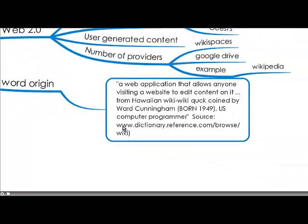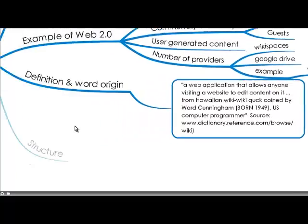So what is the word origin? Well, it's a web application that allows anyone visiting a website to edit content on it. It comes from the Hawaiian language — 'wiki wiki' — which means 'quick quick,' and it was coined by Ward Cunningham. I love that: wiki wiki, quick quick. I'll always remember that now.